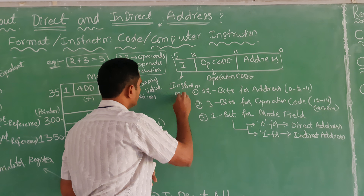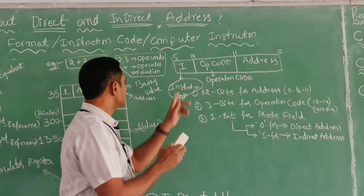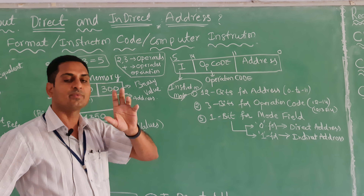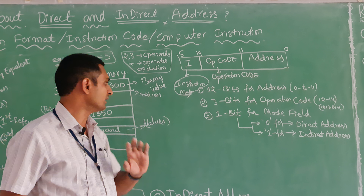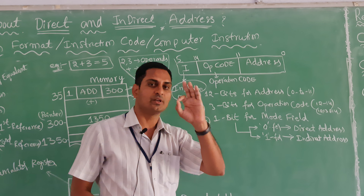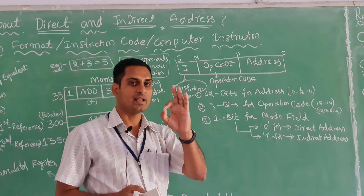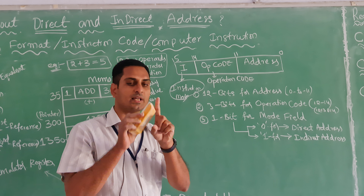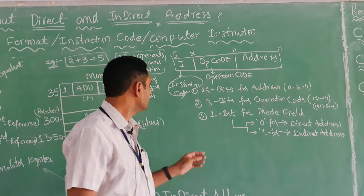I stands for instruction mode. It is a 1-bit flip-flop — a 1-bit cell that can store either 0 or 1. If it is 0, that indicates direct address. Remember: 0 looks like D for Direct. If it is 1, it indicates indirect address — remember I for Indirect. Keep that mnemonic in mind.